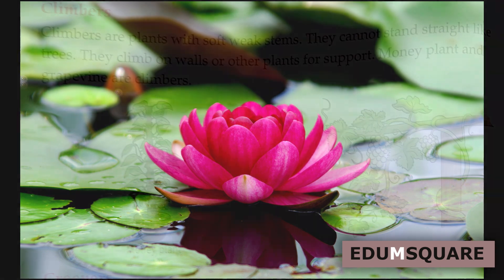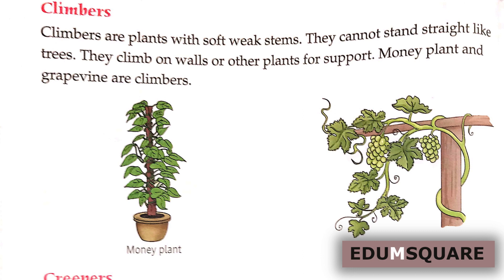Have you seen some plants with soft weak stems that cannot stand straight like trees? They climb on walls or other plants for support. Such plants are known as climbers. They have soft weak stems, so they cannot stand straight. Examples of climbers are money plant and grapevine.